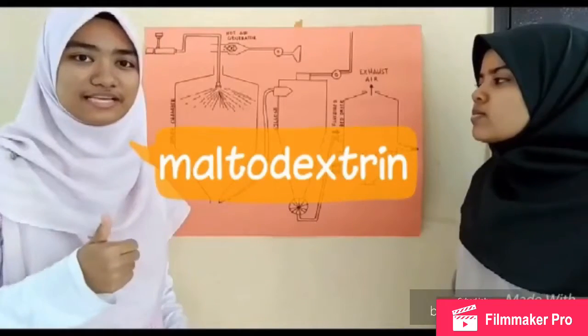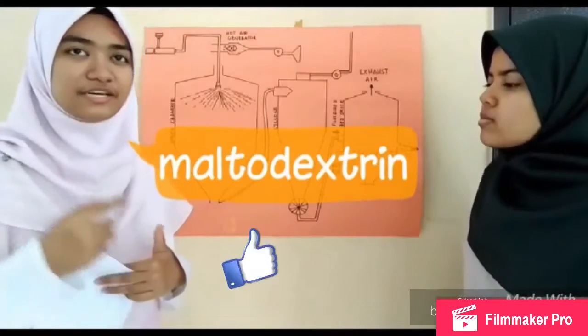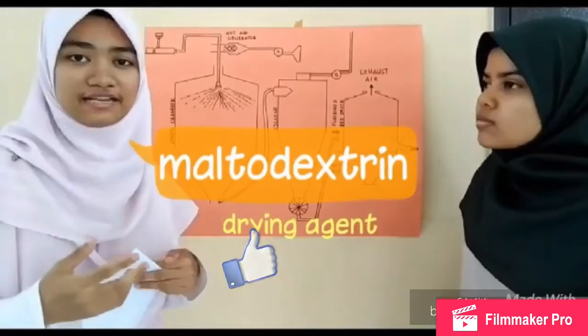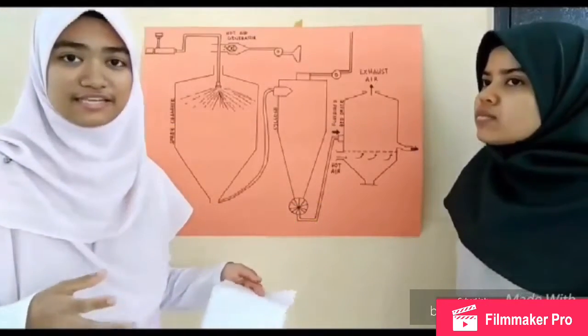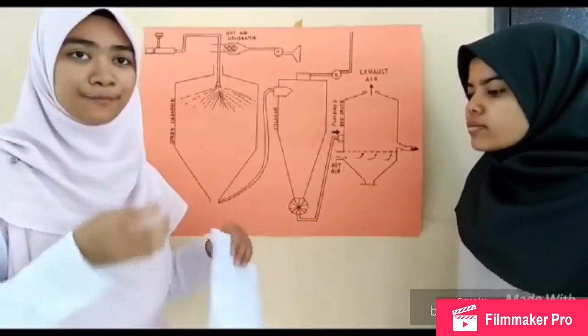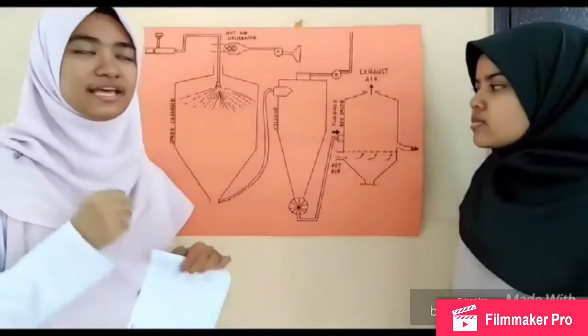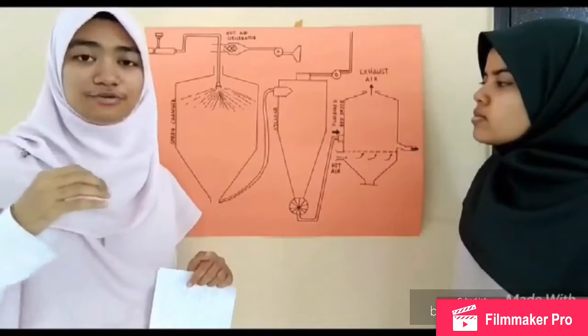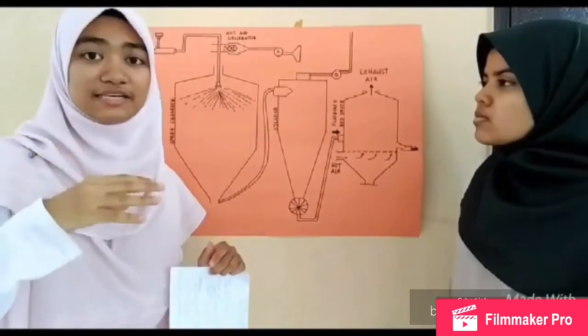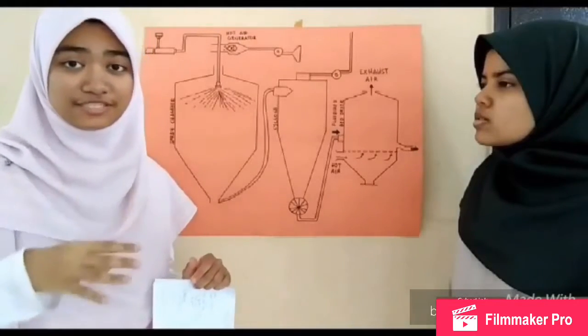Maltodextrin is a hydrocolloid which can facilitate the drying process. It can absorb moisture from the food itself and also increases the glass transition temperature.